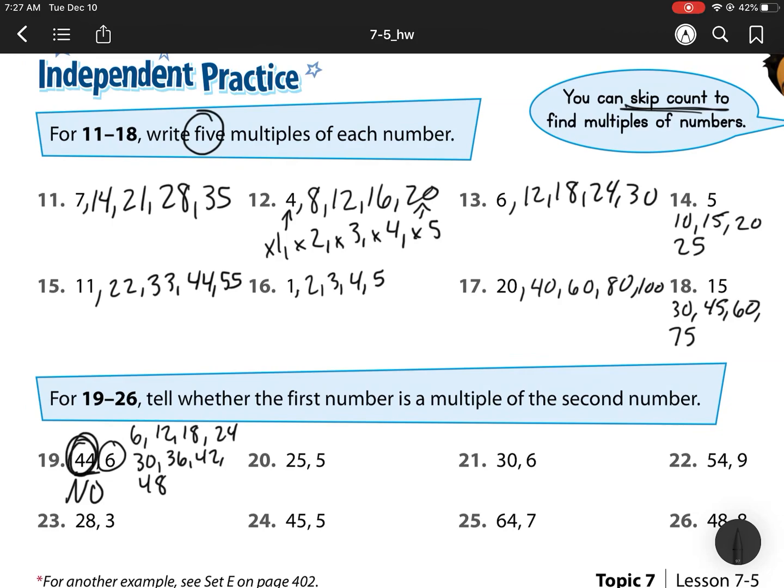For 25, we have 5, 10, 15, 20, 25. And I see it is. So, yes, it is a multiple. For 21, we have 30 and 6. So, 6, 12, 18, 24, 30. So, yes, this one is a multiple as well.